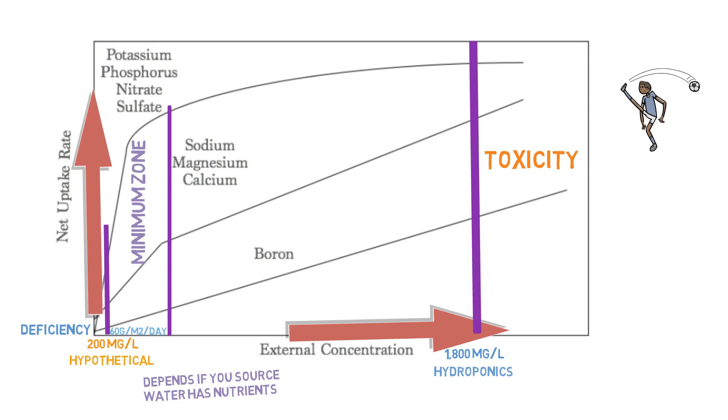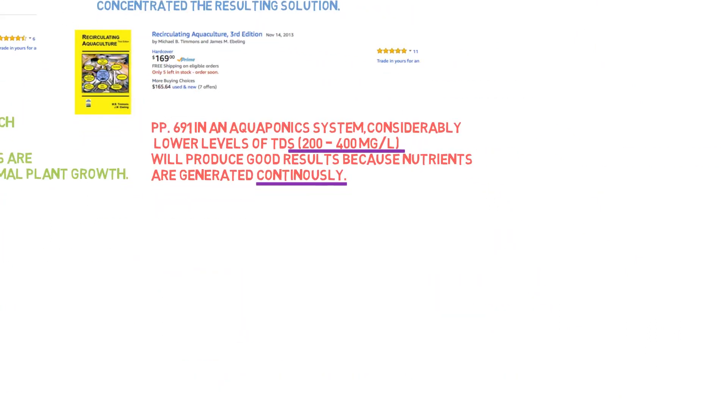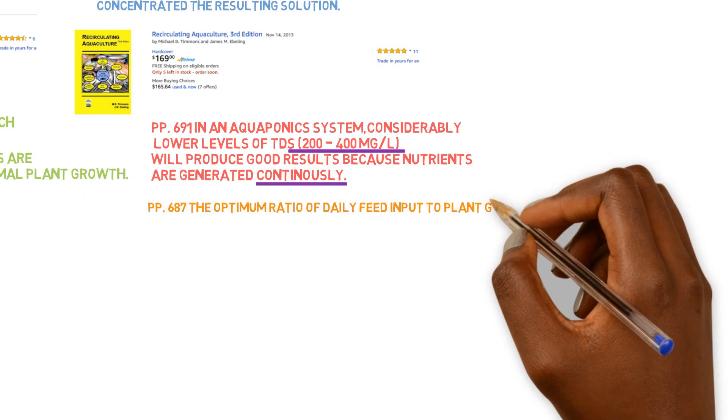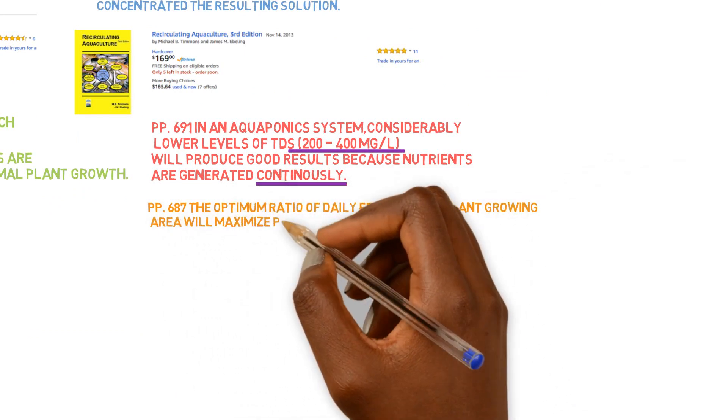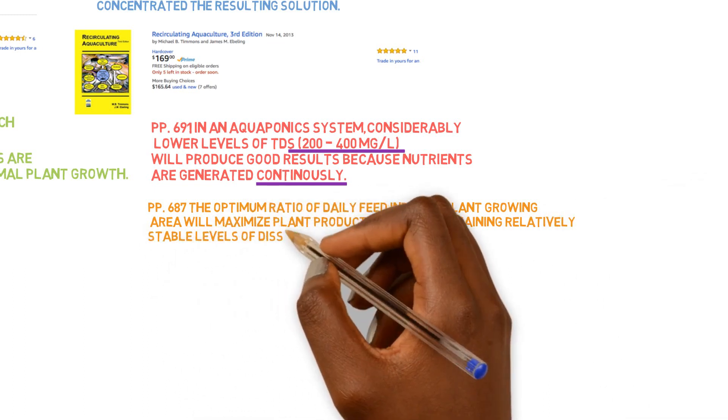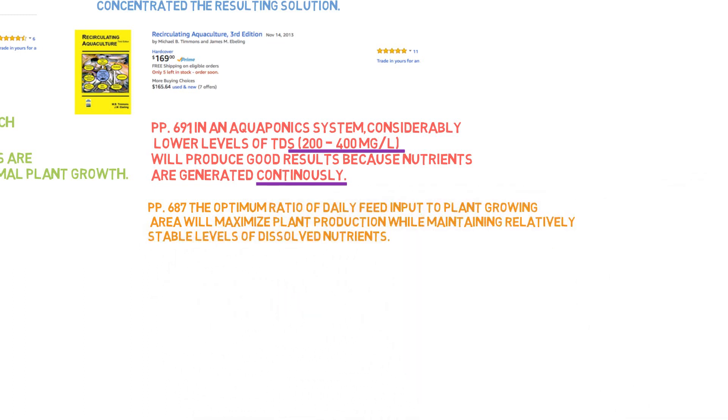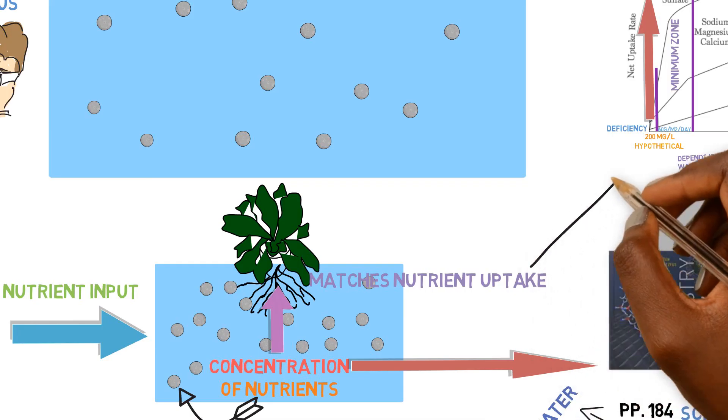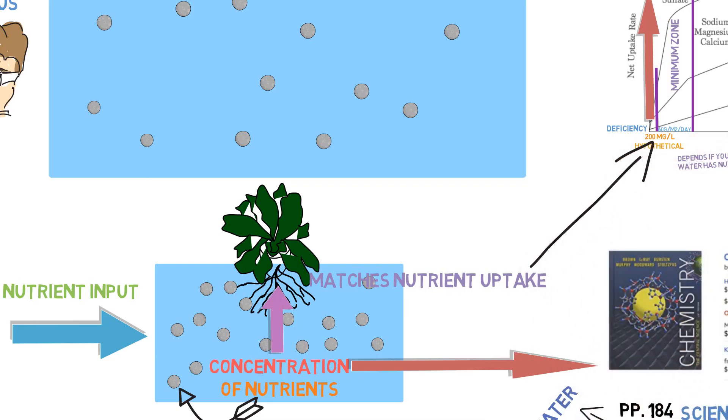It's enough to provide a balance between nutrient input and nutrient uptake. Here's the proof. Page 687, Recirculating Aquaculture. The optimum ratio of daily fish feed input to plant growing area will maximize plant production while maintaining relatively stable levels of dissolved nutrients. You hear that? What's the key word? Maintaining. It's maintaining a relatively stable dissolved nutrient concentration. So that means the input is matching the output and it's staying stable. The nutrient concentration is staying stable.